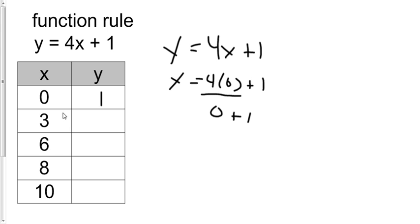But we can do this in our head. Three times four is 12. Twelve plus one is 13. Here it is at six. So the X is six now. Six times four is 24. Twenty-four plus one is 25. Eight times four is 32. So add one is 33. And of course I think you can see that this one would be 41.